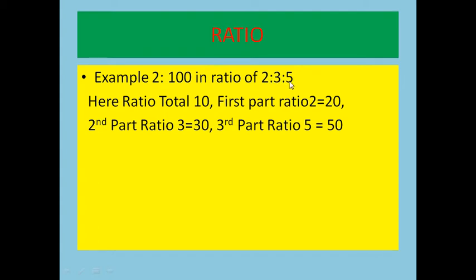In this next example, the value of ratio 1 is 10. There are 10 parts total, so 100 divided by 10 gives ratio 1 equal to 10. The second part, ratio 2, is 20; ratio 3 is 30; and ratio 5 is 50, since the value of ratio 1 is 10.